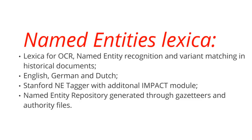A key weakness in normal dictionaries is their lack of comprehensive coverage for proper names, or so-called named entities — for example, people, places, and company names. To overcome this, we have generated a repository of named entities for some languages. These can be used for both OCR processing and information retrieval purposes.